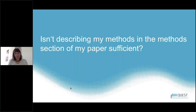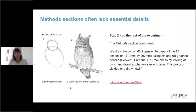You might be wondering, isn't describing my methods in the method section of my paper sufficient? After all, it's called a method section, and that's what it's for. However, many of you will have had the experience of trying to reproduce methods based simply on what's reported in the method section, and you will have found that method sections are often lacking essential details. Here's an example: if we were looking for a protocol on how to draw an owl, we might find something that says 'draw some circles and then draw the rest of the owl.'